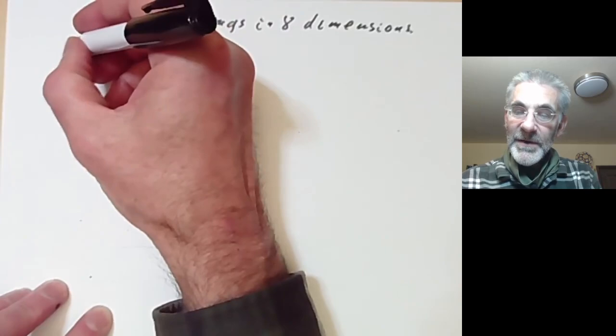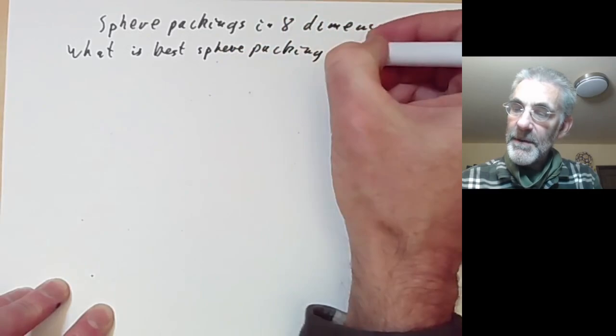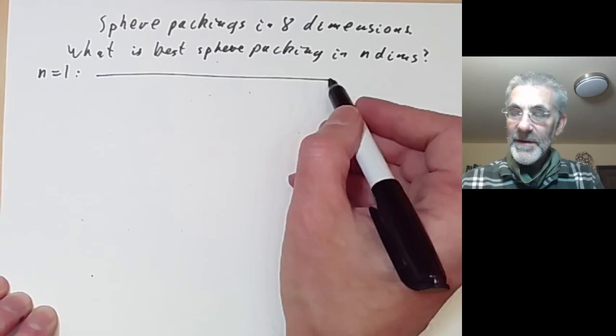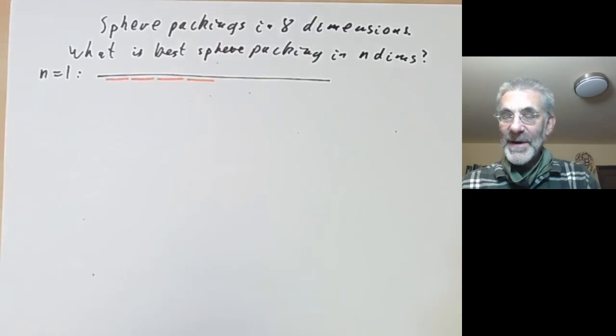As background, let's take a look at the following problem: what is the best sphere packing in n dimensions? In small dimensions this is pretty obvious. In dimension one the sphere packing is completely trivial — a ball is just a unit interval and the best way to pack unit intervals into one-dimensional space is utterly trivial.